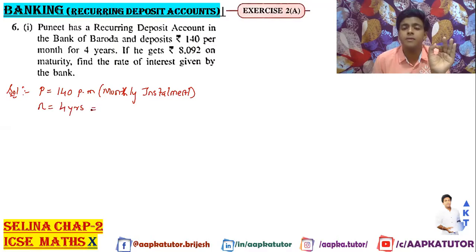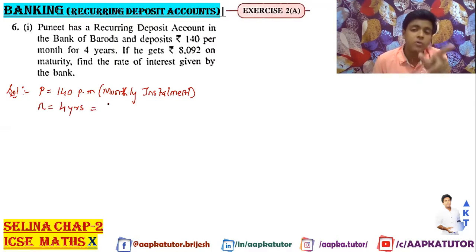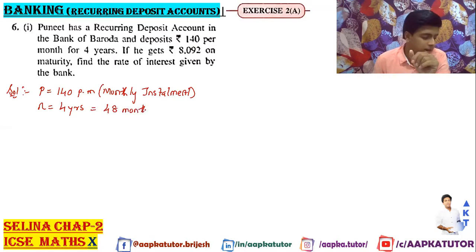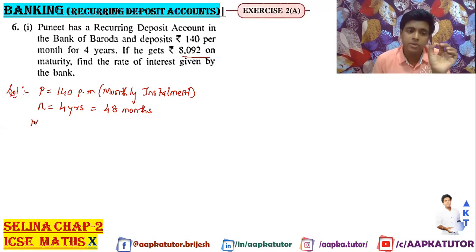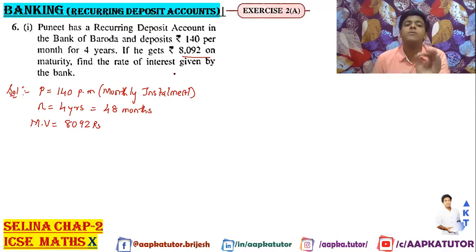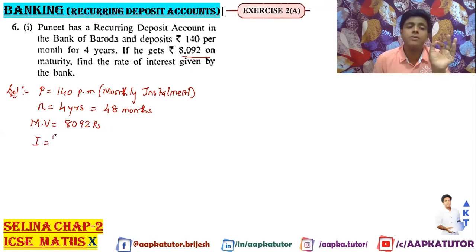So what is your n? It is 48 months. If he gets Rs. 8092 on maturity, you know the maturity value is 8092 rupees. Find the interest given by the bank. So you will have to find the interest given by the bank. Simple formula.